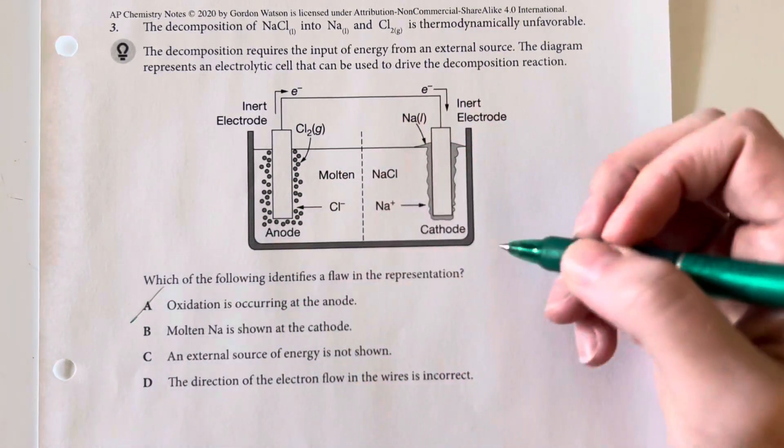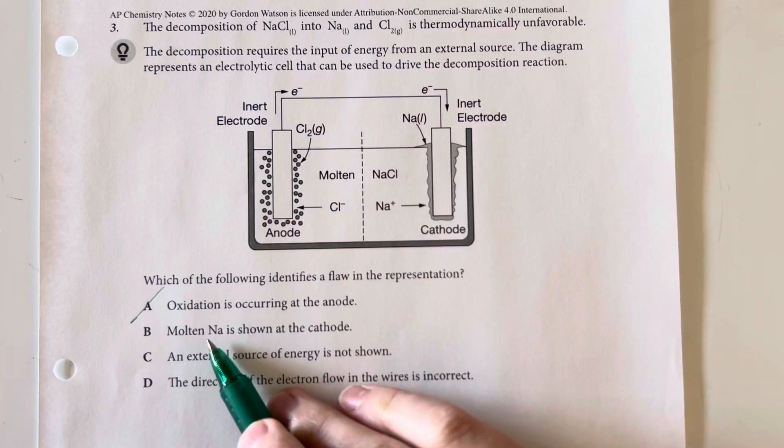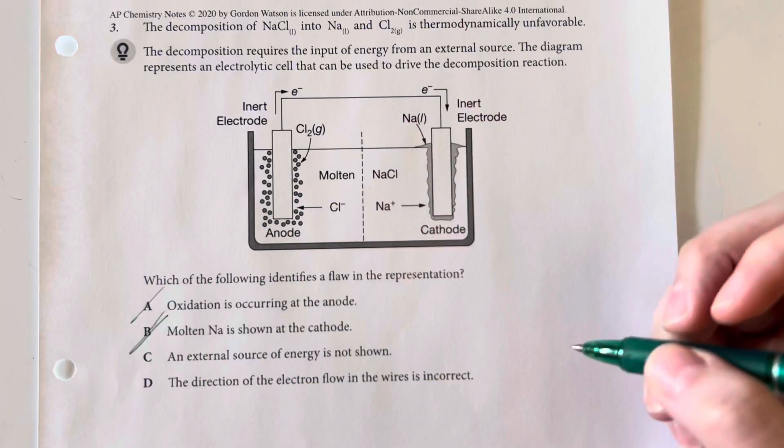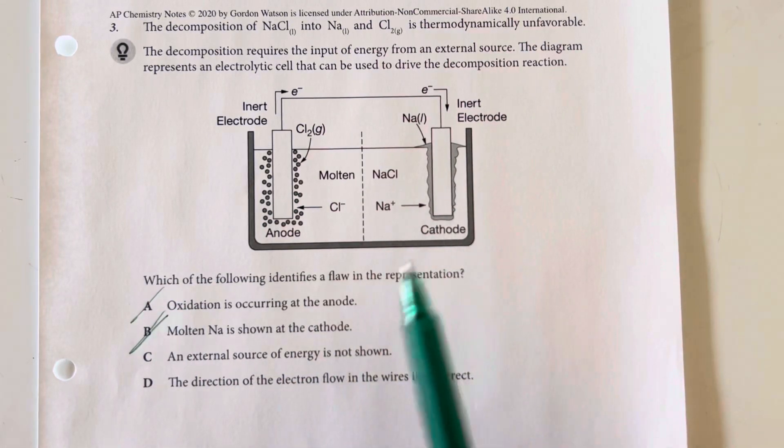So, the oxidation occurring at the anode is not my problem. The molten sodium is shown on the cathode. No, that's where that should be, so not my problem.